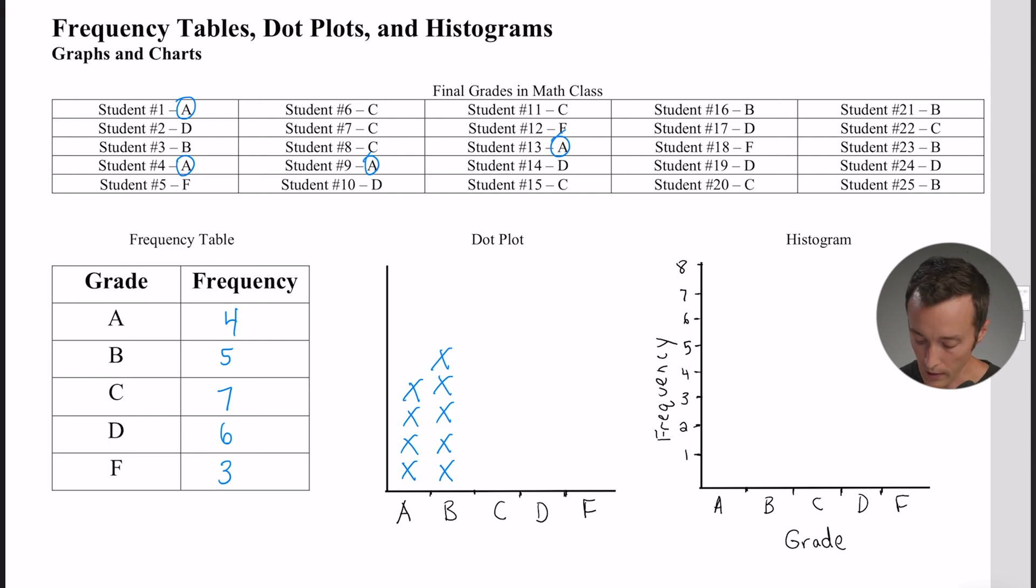The C's, there were seven. So one, two, three, four, five, six, seven. The D's, there were six. One, two, three, four, five, six. And then there were three F's. So one, two, three. Now you've made a dot plot. You can see how a frequency table and a dot plot are very closely connected. The frequency table is just the same information in a table format, but the dot plot shows it to you graphically.